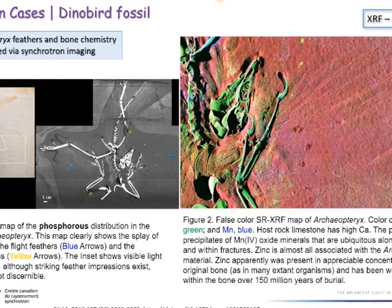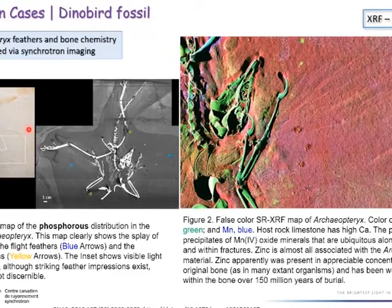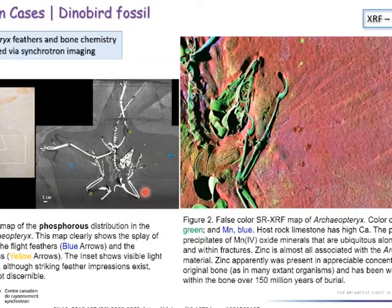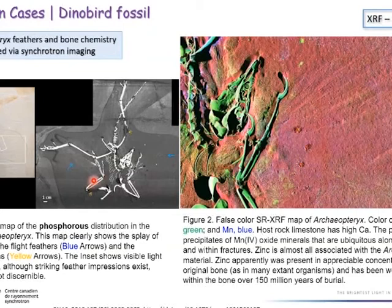I'll now show a few application cases. The first example is what I call a dino-bird fossil — discovered in Germany and provided by a dinosaur center. The fossil is embedded in host stone. This image shows the phosphorus distribution measured across the whole specimen. You can actually see the wing of this bird-like dinosaur, with feather structure visible, and also some broken bones that were reconstructed but are clearly distinguishable in the X-ray fluorescence image.